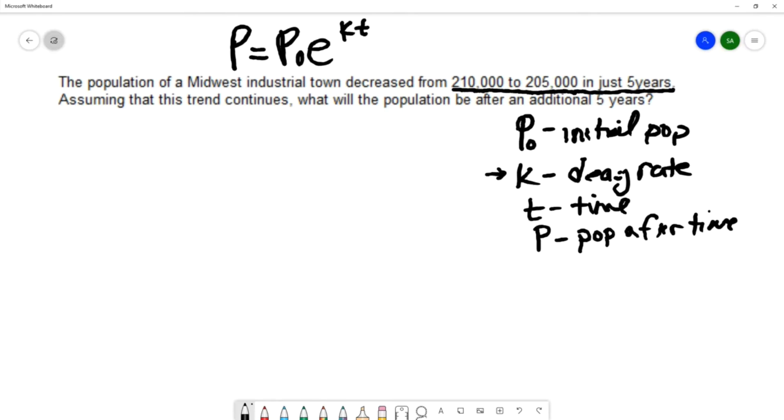We're going to use P₀ to be 210,000. We're going to use P to be 205,000, and we'll use t to be 5 years.